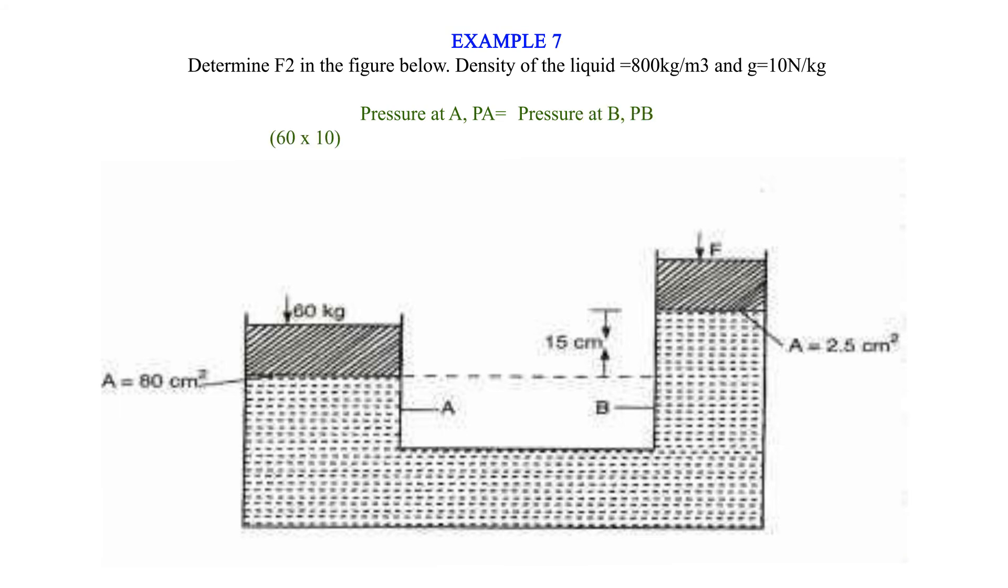60 times 10 over 0.008 equals F2 plus 0.15 times 800 times 10 over 0.00025. 0.00025 into 7500 minus 1200 equals F2. F2 equals 18.45 newtons.